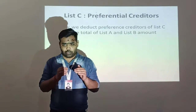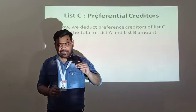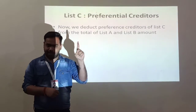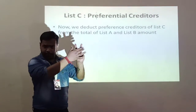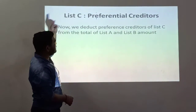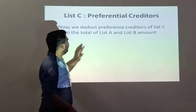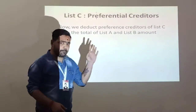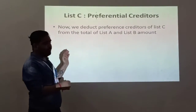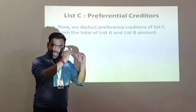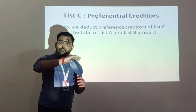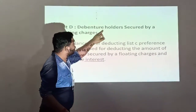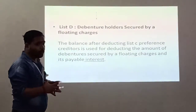So in this video, List C means after adding List A and the surplus of List B, we will deduct List C - the preferential creditors. After deducting, the balance amount is used for List D. List D is debenture holders secured by the floating charges.